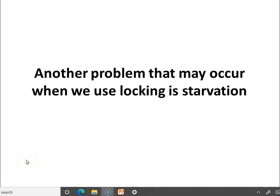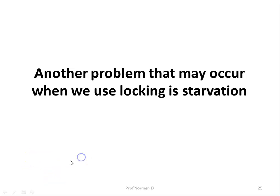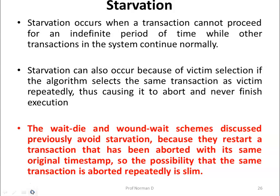Another problem when using a locking mechanism is starvation. Starvation occurs when a transaction cannot proceed for an indefinite period of time while other transactions in the system continue normally. Starvation can also occur because of victim selection — if the algorithm selects the same transaction as a victim repeatedly, it will abort and never finish execution. The Wait-Die and Wound-Wait schemes avoid starvation because they restart an aborted transaction with the same original timestamp, making it very unlikely the same transaction is aborted repeatedly.